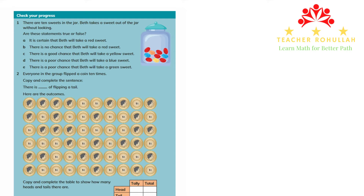We have two questions in this part. The first question says there are 10 sweets in the jar. It takes a sweet out of the jar without looking. We need to decide if these statements are true or false. Out of the 10 sweets in the jar, six of them are red, two are blue, one orange, and one yellow. Let's read the statements one by one.